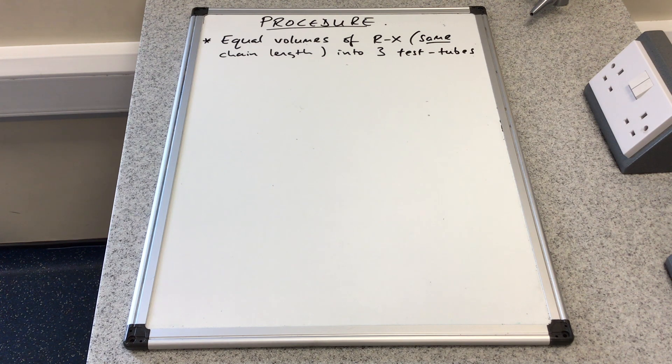First, you take equal volumes of the haloalkanes - they've got to be the same chain length, that's really important. The ones we use in college are the halobutanes: chlorobutane, bromobutane, and iodobutane. You measure equal volumes of those into three separate test tubes.